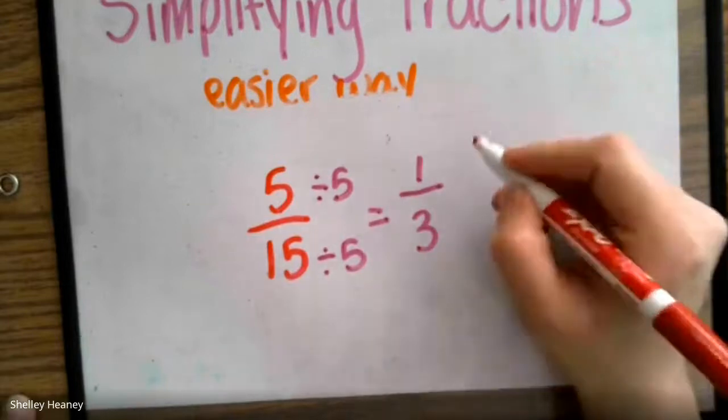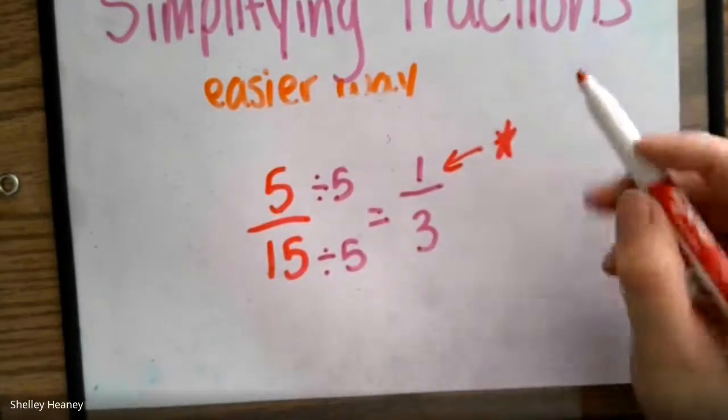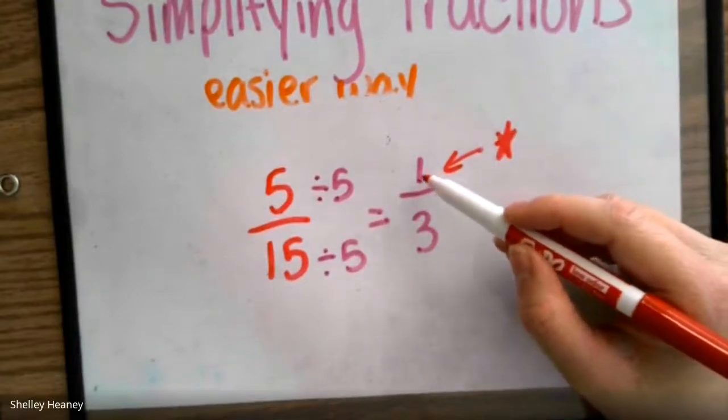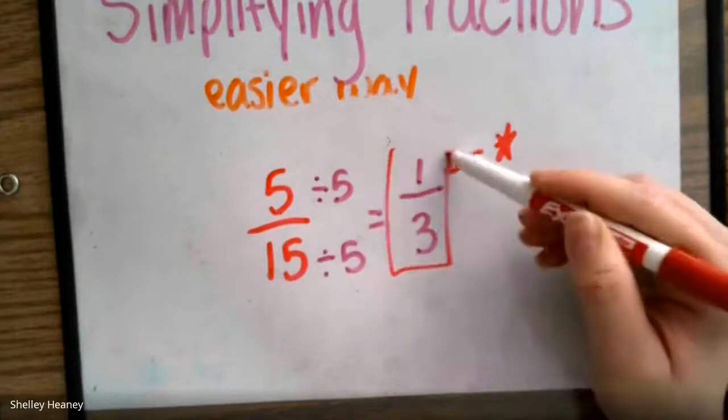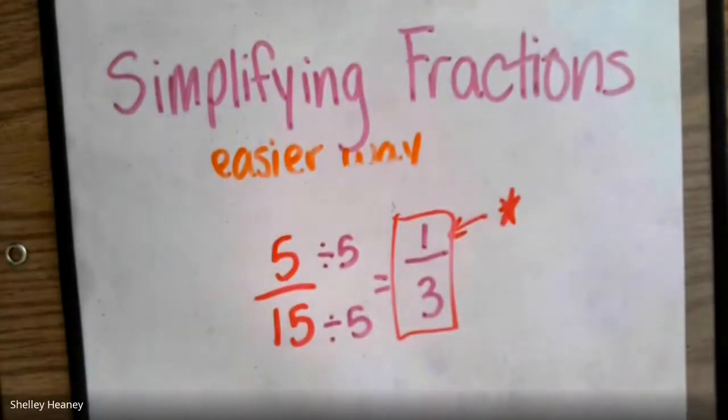A good hint is if the numerator is 1, you know that you found your simplest form. But not always does the numerator have to be 1, but if it is, you are in simplest form. I hope this video helped you understand a little bit on how to simplify fractions. Thanks for watching. Bye!